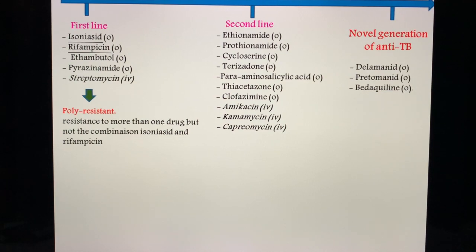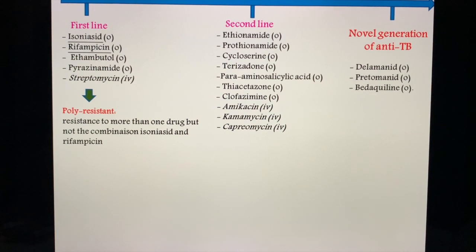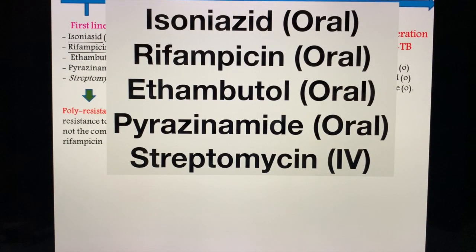Here is an illustration — take time, pause the video, and go over this. Take notes. All first-line drugs are oral except streptomycin, which is intravenous. The second-line drugs — just to mention a few — include cycloserine, amikacin, and capreomycin. We're also going to discuss the novel generation of anti-TB drugs.